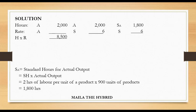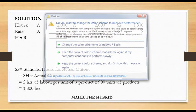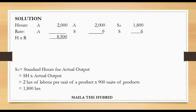We are told the actual labor cost was $8,500. When computing variances, we just need the cost values at the bottom. For actual cost, you are given the total figure of $8,500. Then multiply 2,000 by $6 to obtain $12,000, and multiply 1,800 by $6 to obtain $10,800.